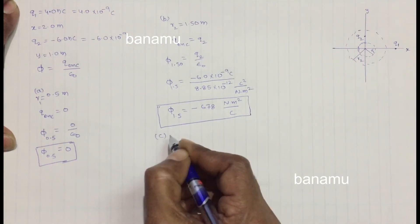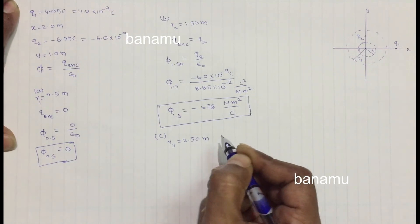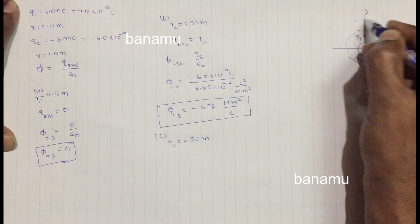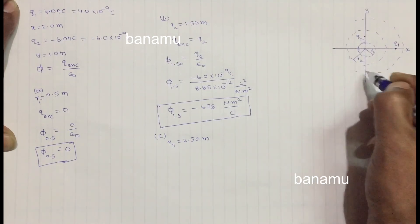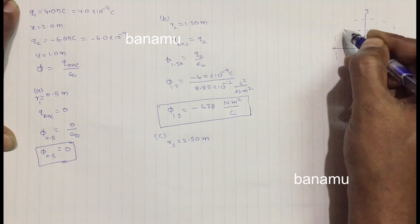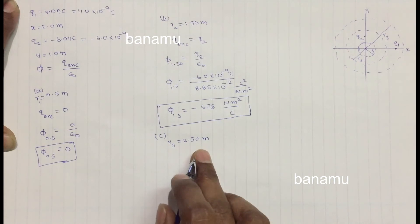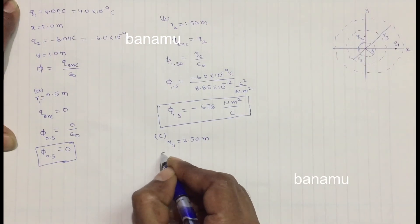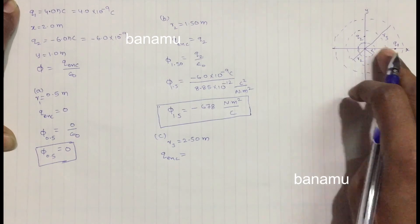For part C, consider the Gaussian surface with R3 = 2.5 meters. We calculate the electric flux at the surface of radius 2.5 meters. In this Gaussian surface, the total enclosed charge includes both Q1 and Q2, since both charges lie within 2.5 meters of the origin.